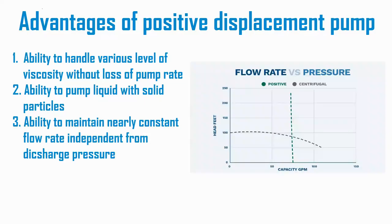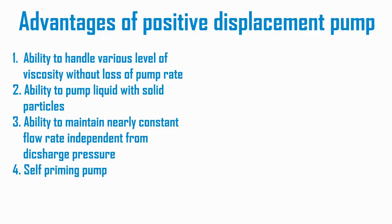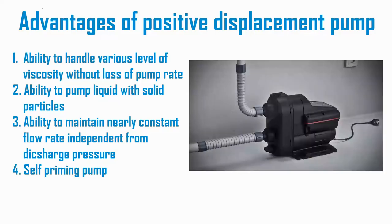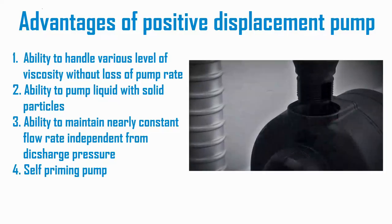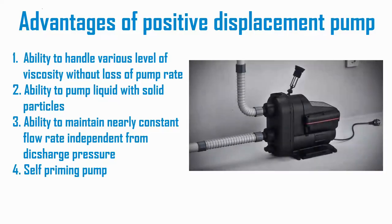The rotary positive displacement pump has a constant flow rate — the flow rate is always constant as long as the drive is still strong enough, and it is independent of the pressure on the discharge side of the pump. The rotary positive displacement pump is also a self-priming pump, meaning there is no need to fill it with liquid to start the pump.